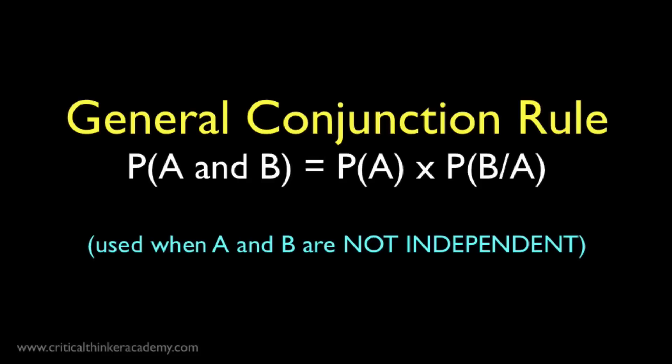In the last video, we looked at the restricted conjunction rule, which is the rule for calculating the probability of a conjunction of events when those events are independent of one another. In that case, you simply multiply the probabilities for each event. Now we need to look at the more general case, where the events are not independent.